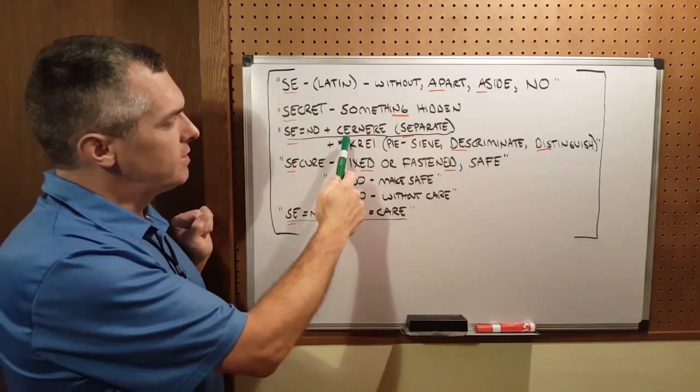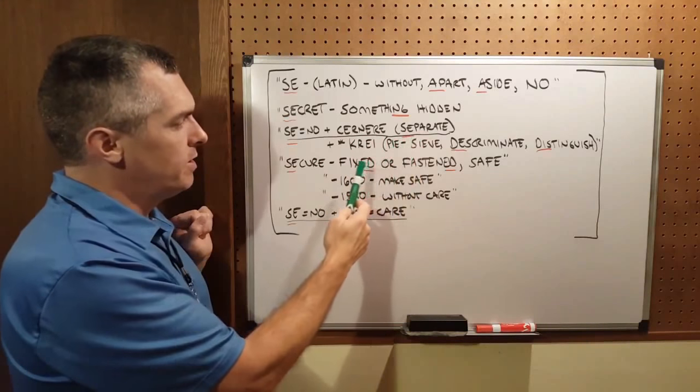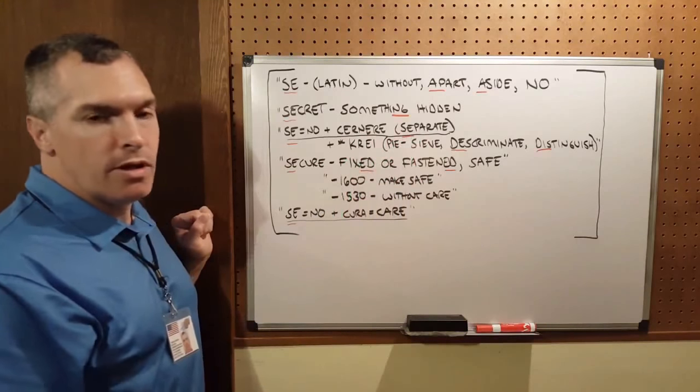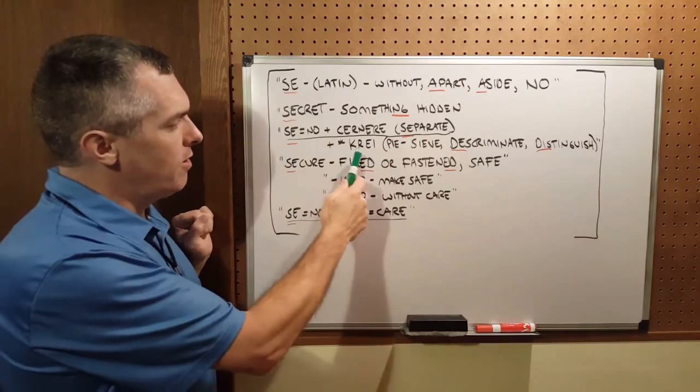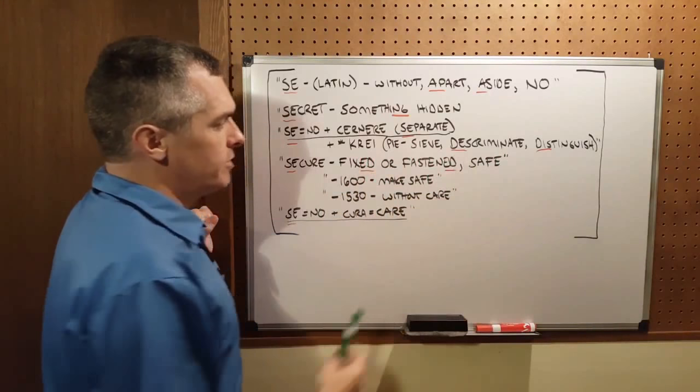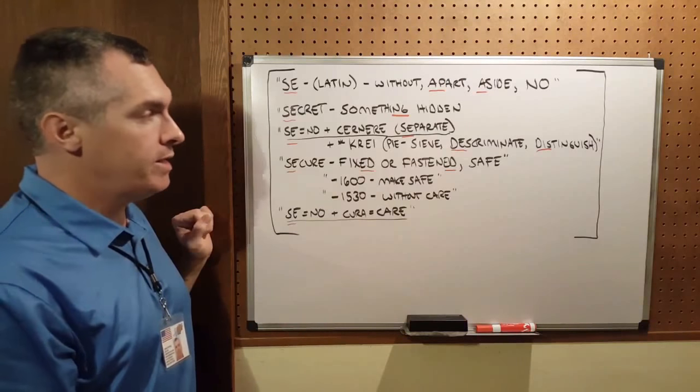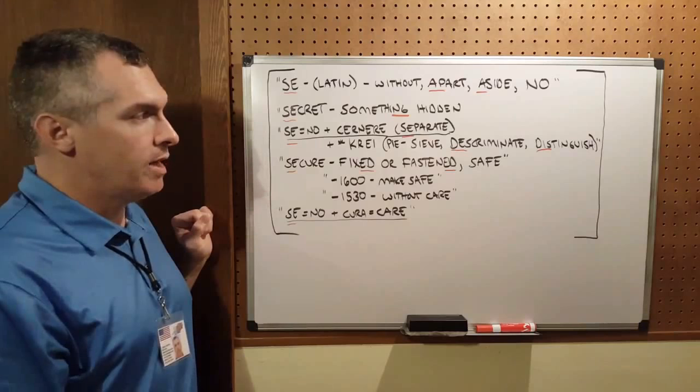Plus CERNERE means separate, all the way back to the Proto-Indo-European root KREI, which means deceive, discriminate, distinguish. In other words, secret means not hidden, not separate, not distinguished.